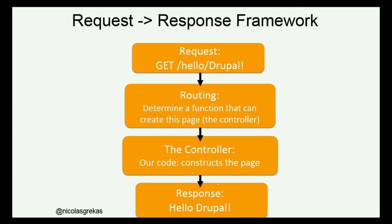Let's see the general workflow of the request-response cycle that frameworks deal with. The request comes from the browser — or some web client. Then routing maps the URL to some controller. The controller is the actual function and code that should be run for the route that the router matched. Then the controller is responsible for returning a response, creating it, and giving it back to the browser. That's the typical workflow, and we're going to see this slide a few times because it's really the core hot path of every framework nowadays.